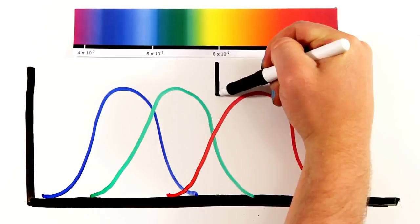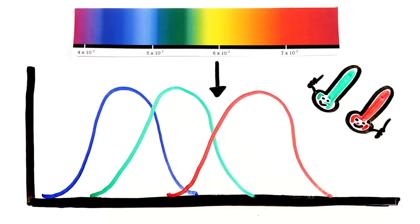And because the wavelength of yellow is between red and green, our brain interprets this mix as yellow. So what you're seeing here is in fact not yellow at all, but it's stimulating a mix of your red and green cones, which your brain interprets as yellow.